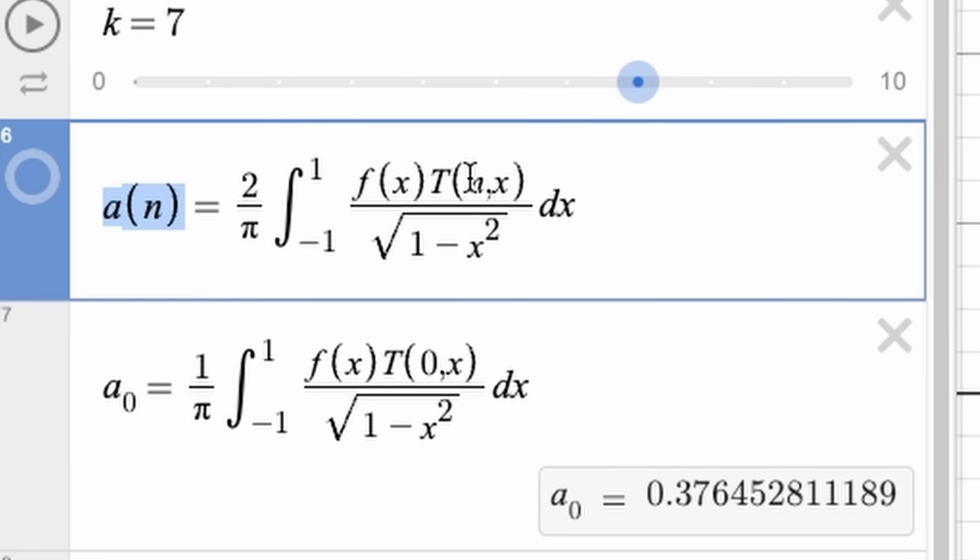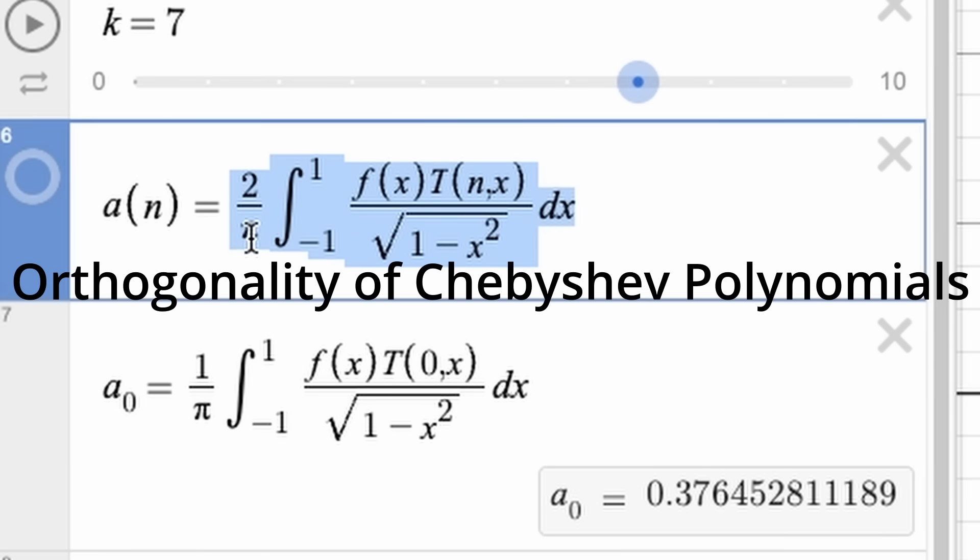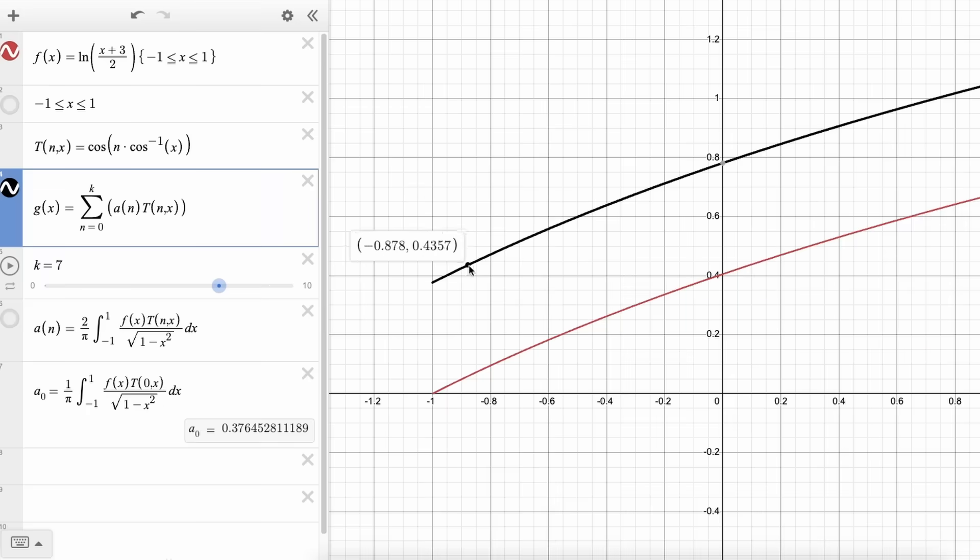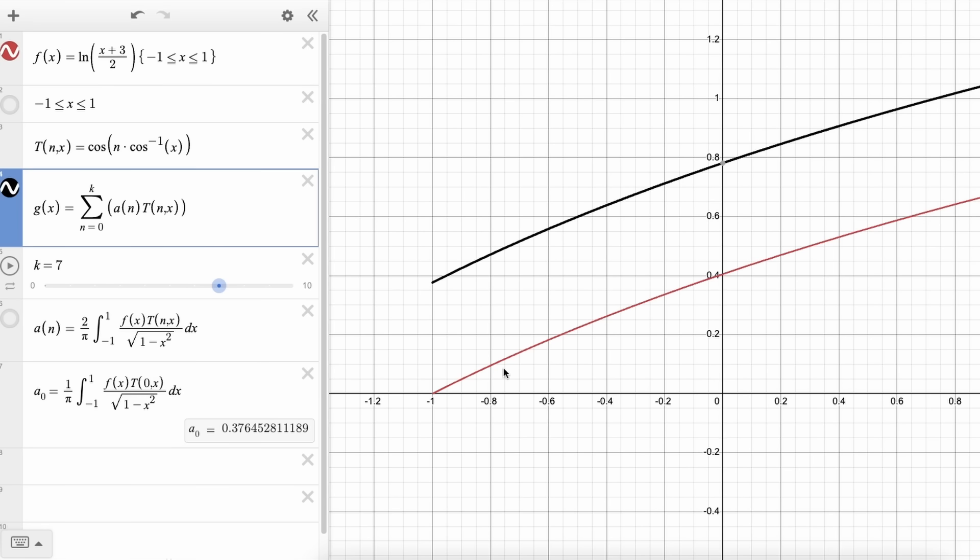So we're going to define a_n as 2 over pi times the integral from minus 1 to 1 of f(x) T_n(x) all over root 1 minus x squared with respect to x. Now that is how you find the coefficients. If you're wondering where that came from, just look up orthogonality of Chebyshev polynomials. I'm not going to explain it in this video because it takes way too long. But basically, once you do that, you get a very nice approximation of the ln curve. Very nice! You'll notice that it's a little bit offset and that's because we have to subtract a_0 off the end of it. And once we do that, we'll get something that fits basically exactly.